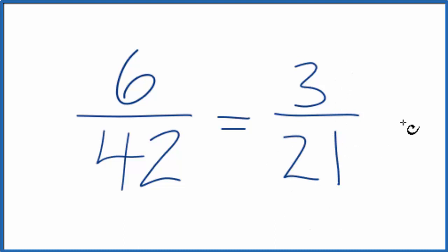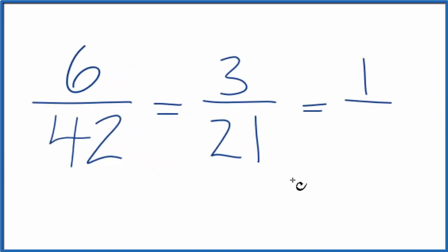So this might be easier. These are smaller. Then if you knew that 3 went into 3, 3 divided by 3 is 1, and also 21. 21 divided by 3, that's 1 over 7.